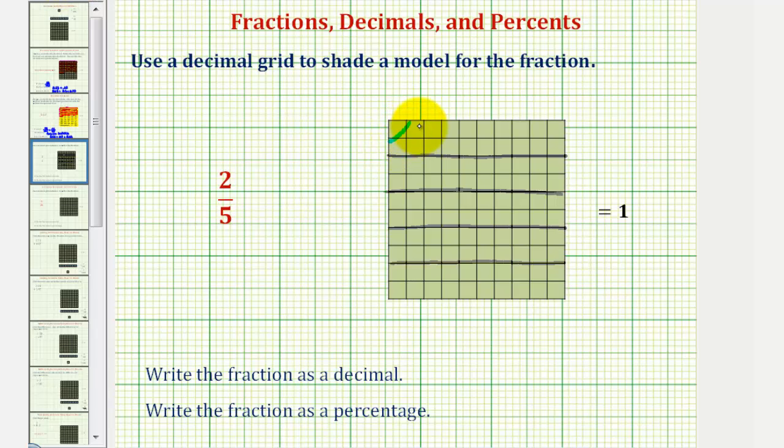Let's go ahead and shade these top two, so the shaded region represents a model for two-fifths of one whole.